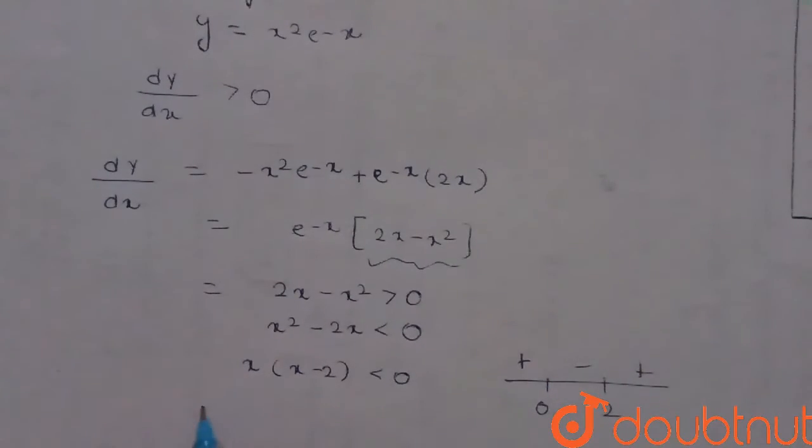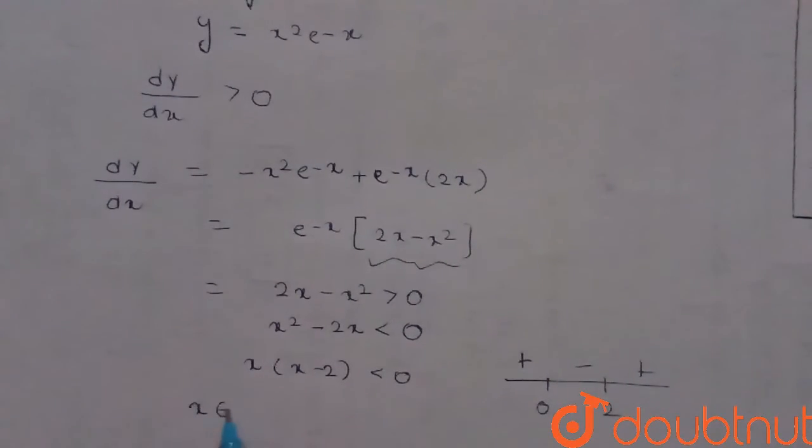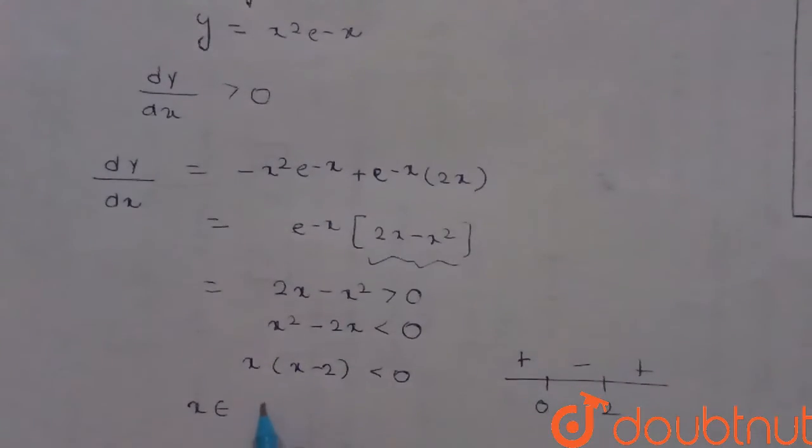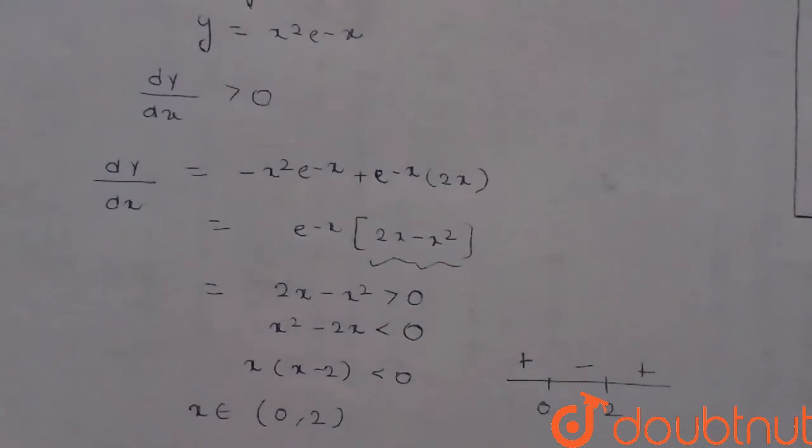So this is negative in 0 to 2. So x belonging to 0 to 2, the function will be strictly increasing. Thank you.